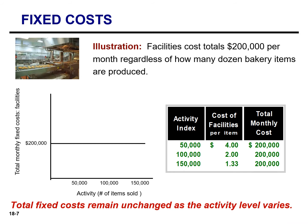To illustrate fixed costs, let's assume our facility costs total $200,000 per month — think of Dunkin' Donuts or Krispy Kreme. Those facility costs include property tax, depreciation on the building and equipment, salaries for the managers, and insurance. Whether that facility is producing 50,000 or 150,000 dozen donuts, that monthly cost will remain the same at $200,000.